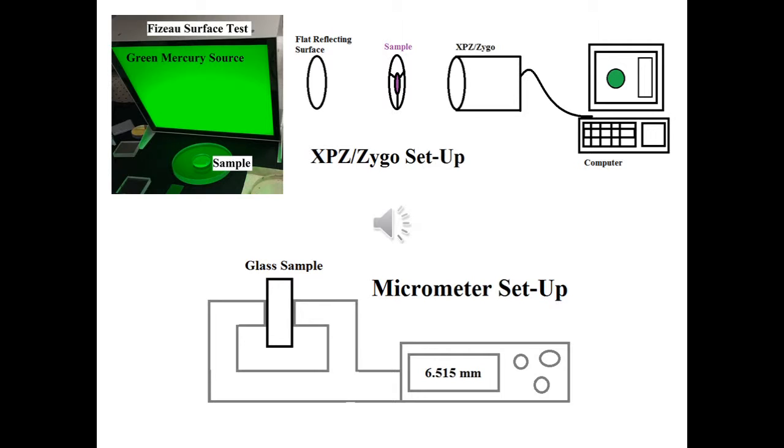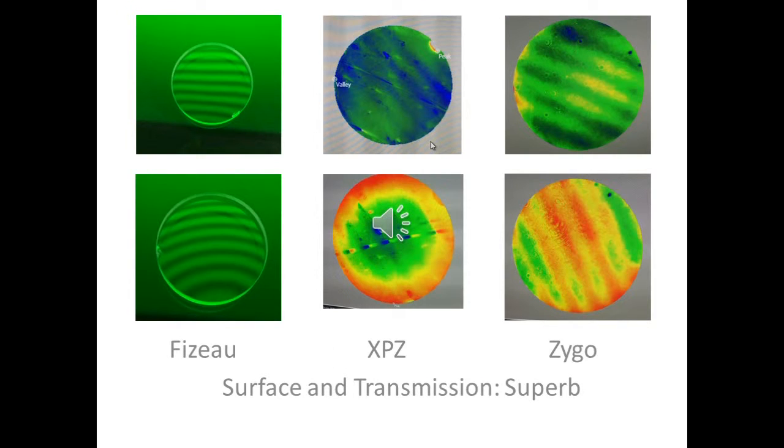Additionally, a micrometer was used to measure the thickness of the sample at different locations. As expected, the sample is very flat. The PIZO test yielded straight lines and the XPZ test showed generally monochromatic surfaces. The variations on the XPZ test come from back reflections from the rear surface which occurs due to their parallel sides.